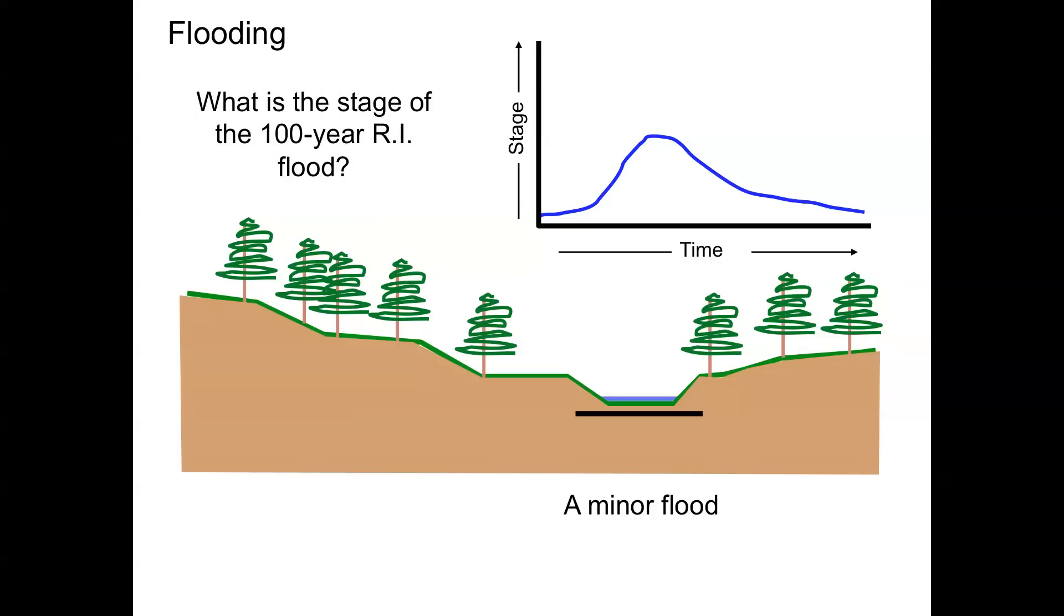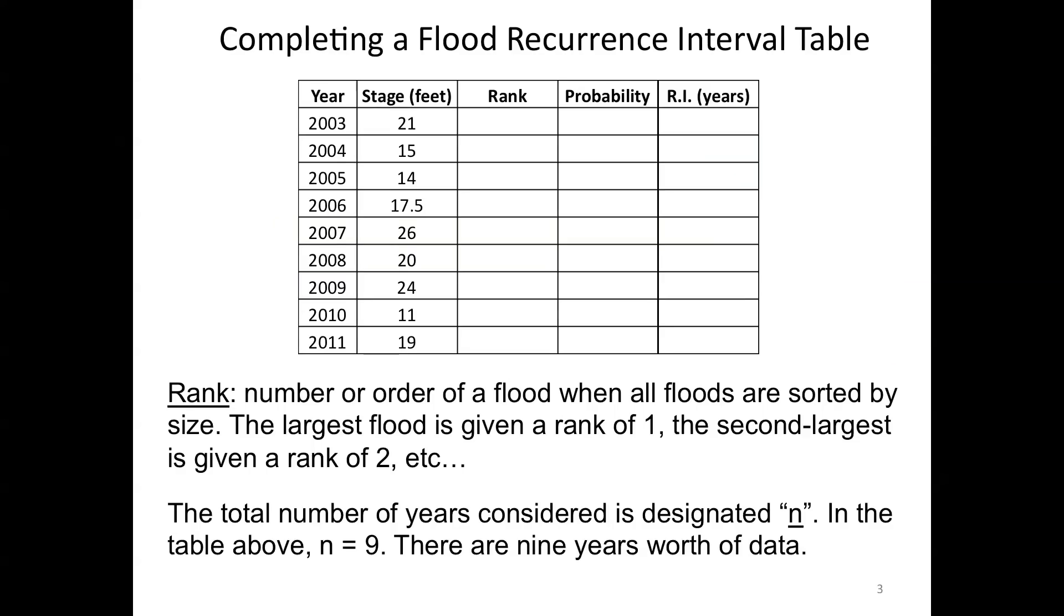So today we're going to ask what is the stage of the 100-year recurrence interval flood for an example river. To calculate flood recurrence intervals, we collect data for peak floods. So this is the stage of the largest flood in these particular years, 2003 through 2011. And to calculate flood recurrence intervals, what we first need to do is rank these floods in order from the largest to the smallest.